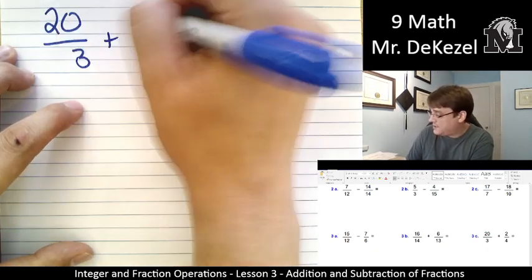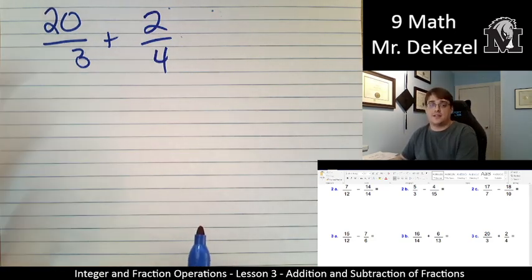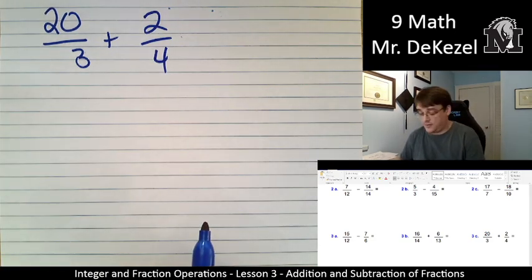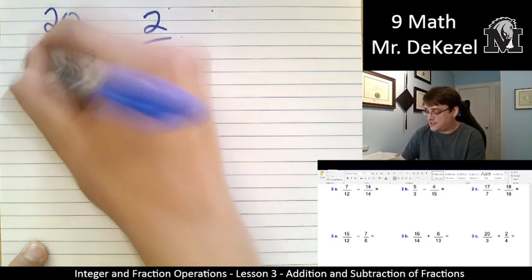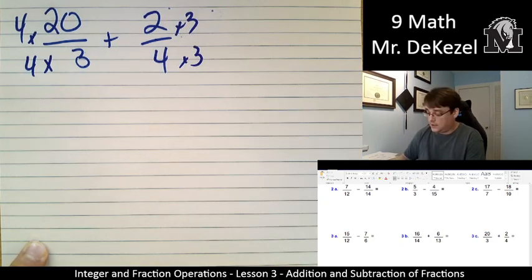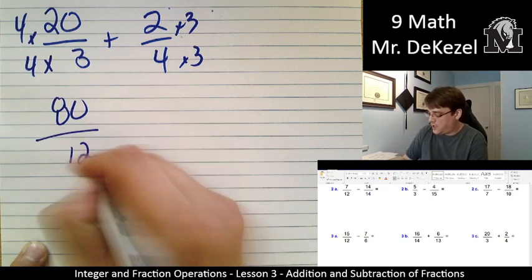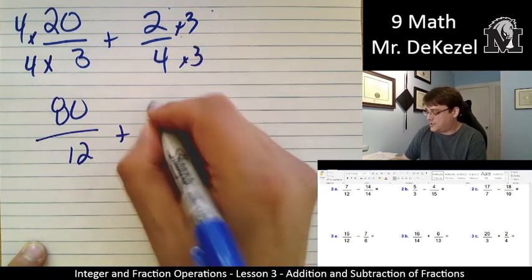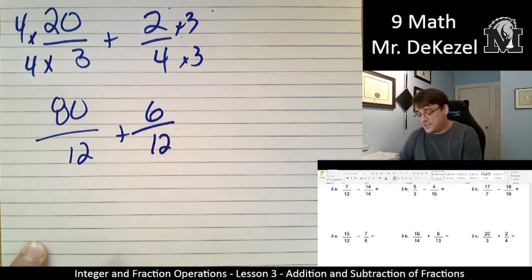20 divided by 3 plus 2 over 4. Let's go ahead and say... Well, I know what the lowest common multiple is of these two. It would be 12. We're going to multiply this side by 4 and this side by 3. So, we're going to get 80. 4 times 20 is 80 over 12. Plus 2 times 3 is 6. 4 times 3 is 12. 80 plus 6 is 86.